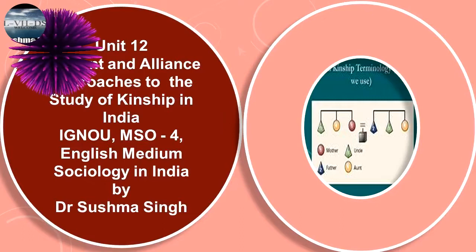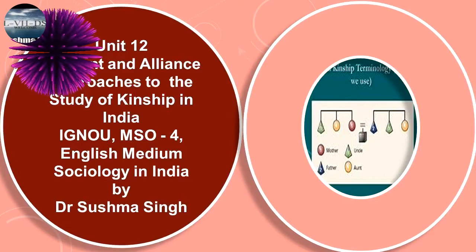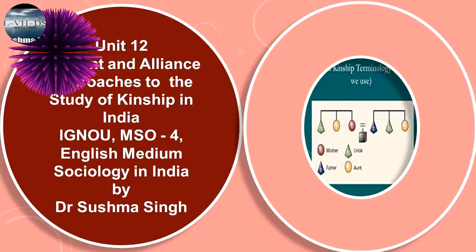You would also like to learn how to write long kinship terms in short. For example, mother's brother's daughter may be written as MBD. Father's sister's daughter's son can be written as FZDS, where Z stands for sister and S for son. Similarly, father's father's brother's daughter can be written as FFBD. This method is useful when describing various sets of kinship terms.